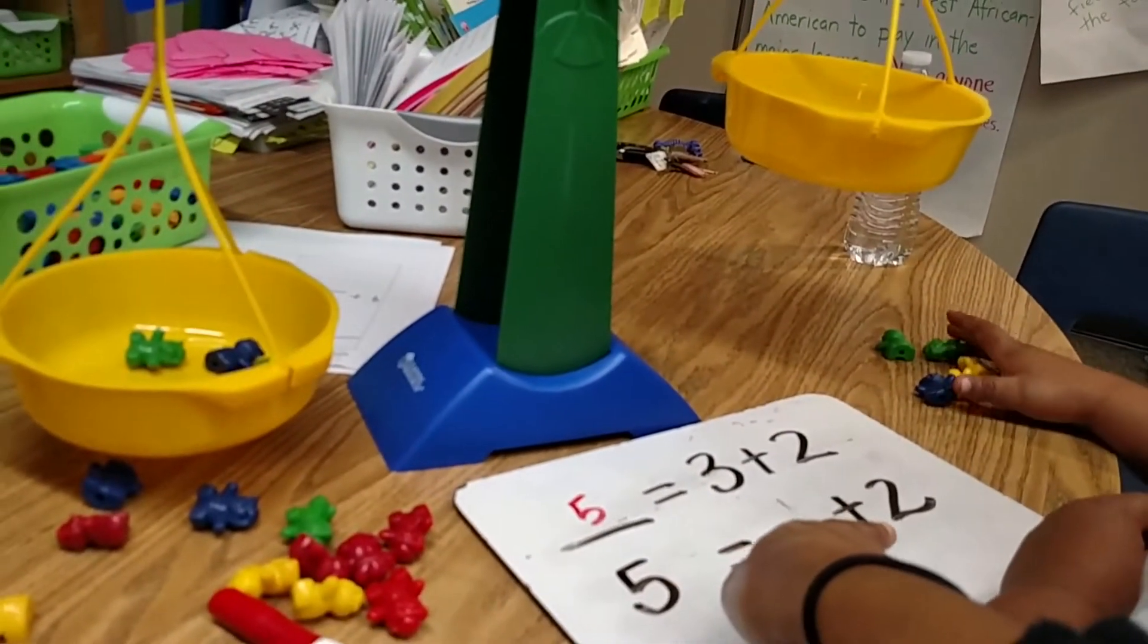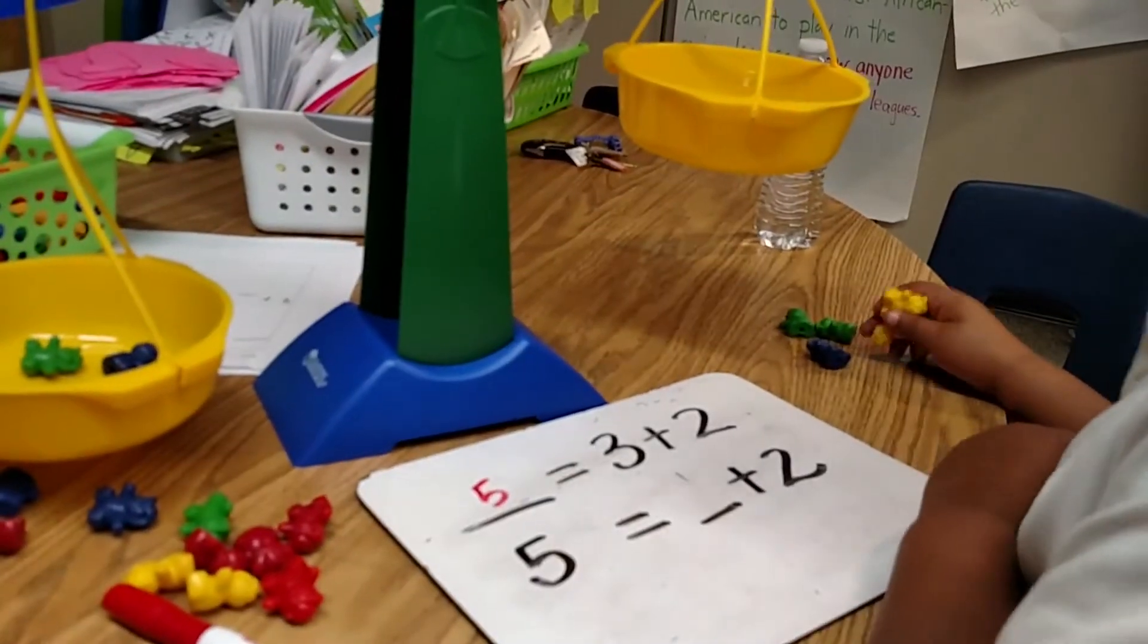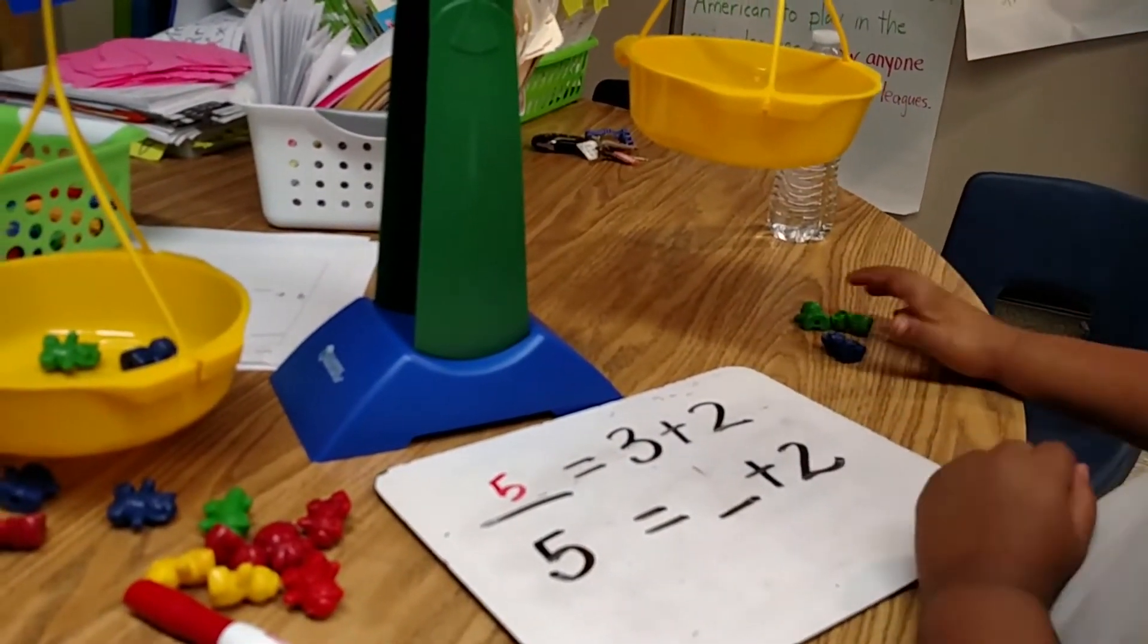And then how many do we know are going to go on this side? Two. Okay, go ahead. Count it out. One, two. All right. Is it balanced?